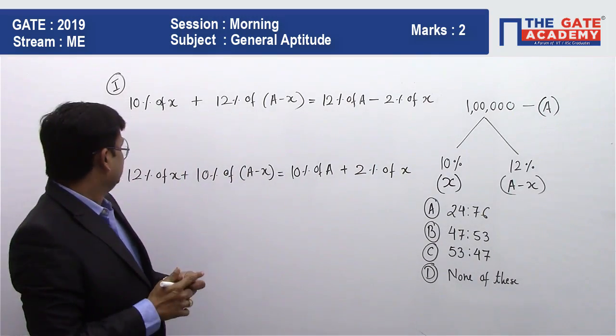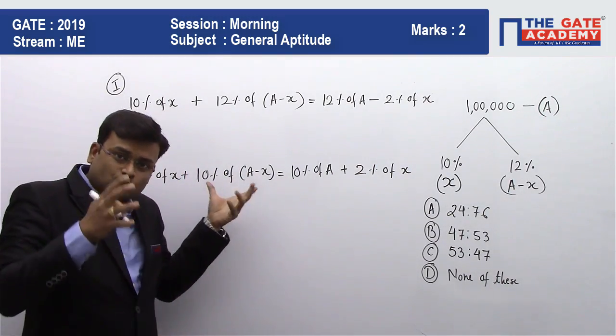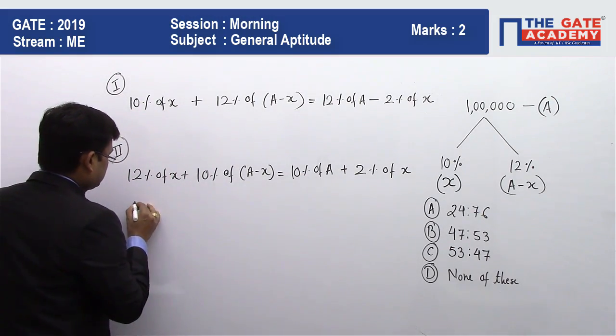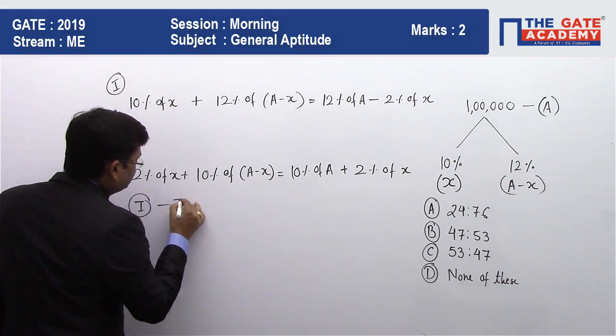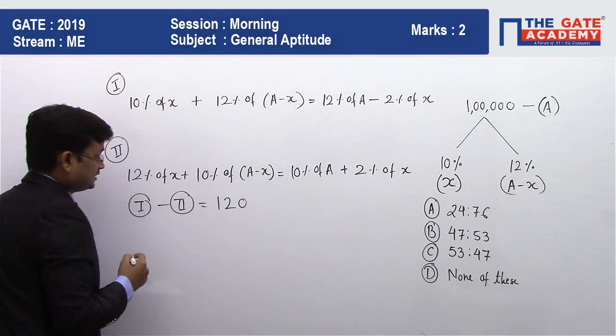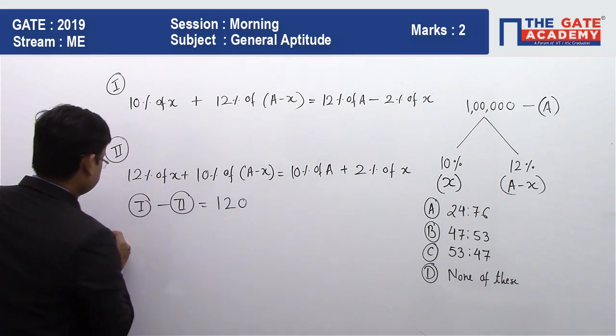Now the question says that in case 2, the total overall profit is getting reduced. So case 1 minus case 2 is nothing but 120 rupees. So let's write here.